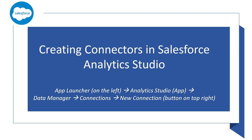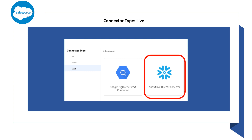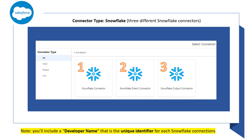Then head on over to Salesforce Analytics Studio to see what types of connections you can create. You can see that there are a lot of choices for connector types in Salesforce Analytics Studio. If you click on the live connector types, you'll see that Snowflake is one of the two options that you have to create a live connection. We're going to create one of each type of Snowflake connection. One important thing to note is that the developer name for the connection is the unique identifier for each Snowflake connection, so each of the developer names have to be different.